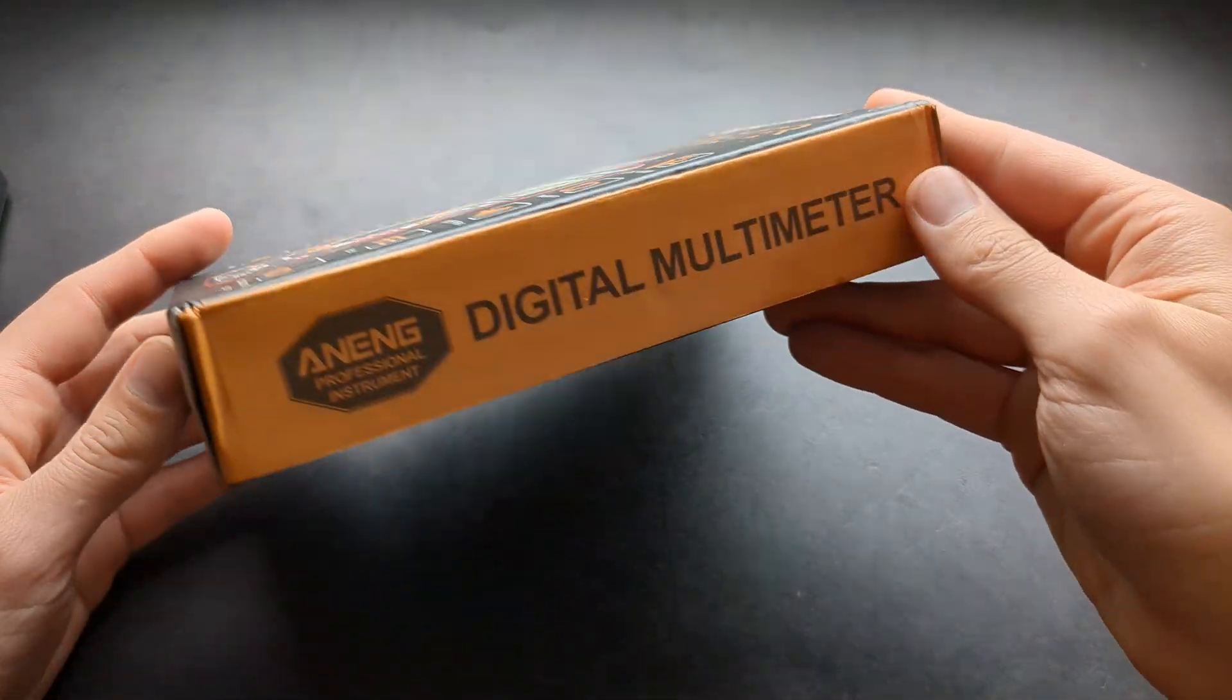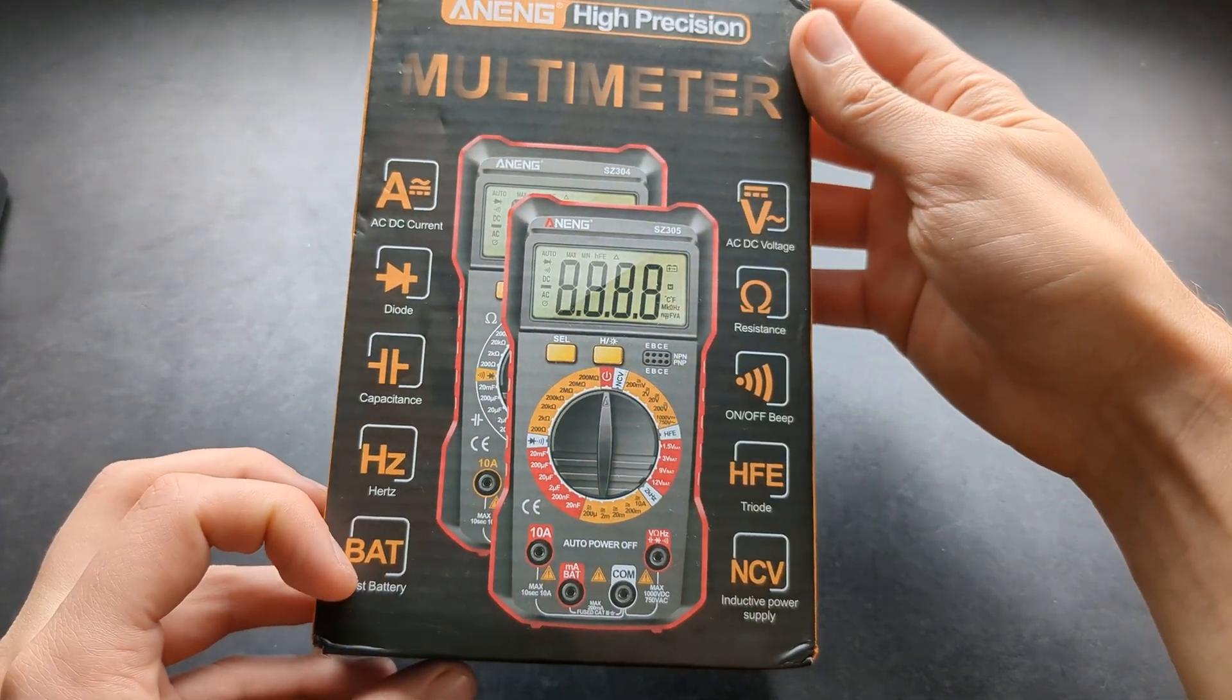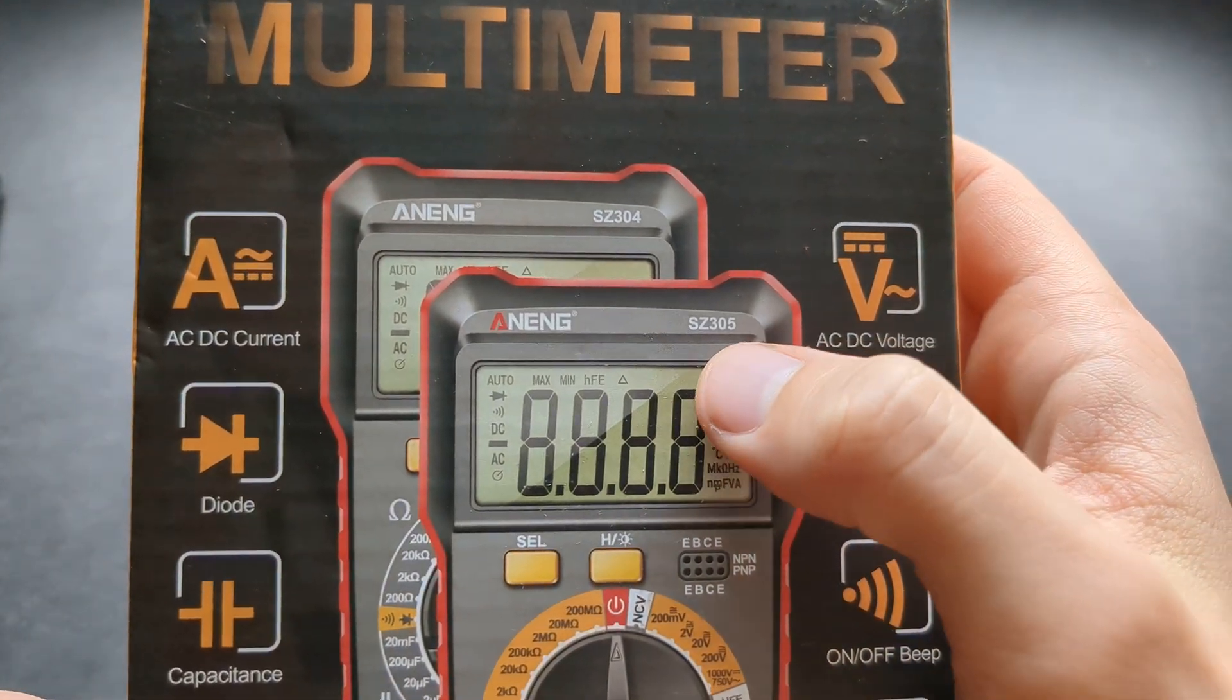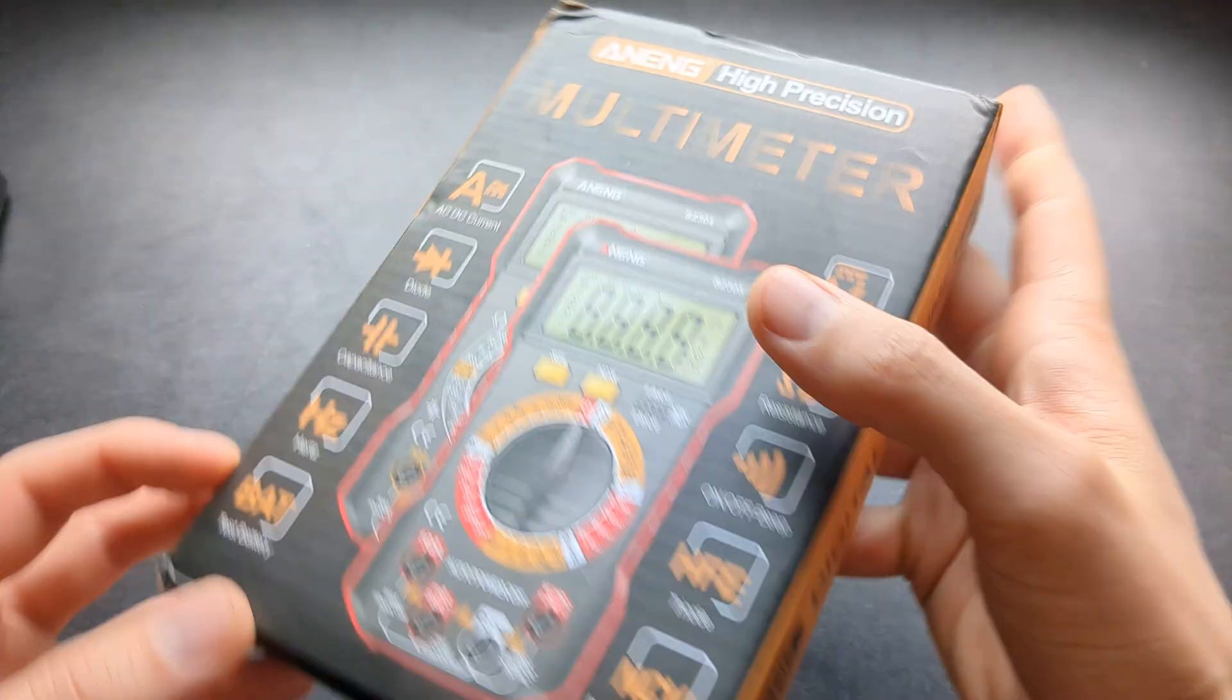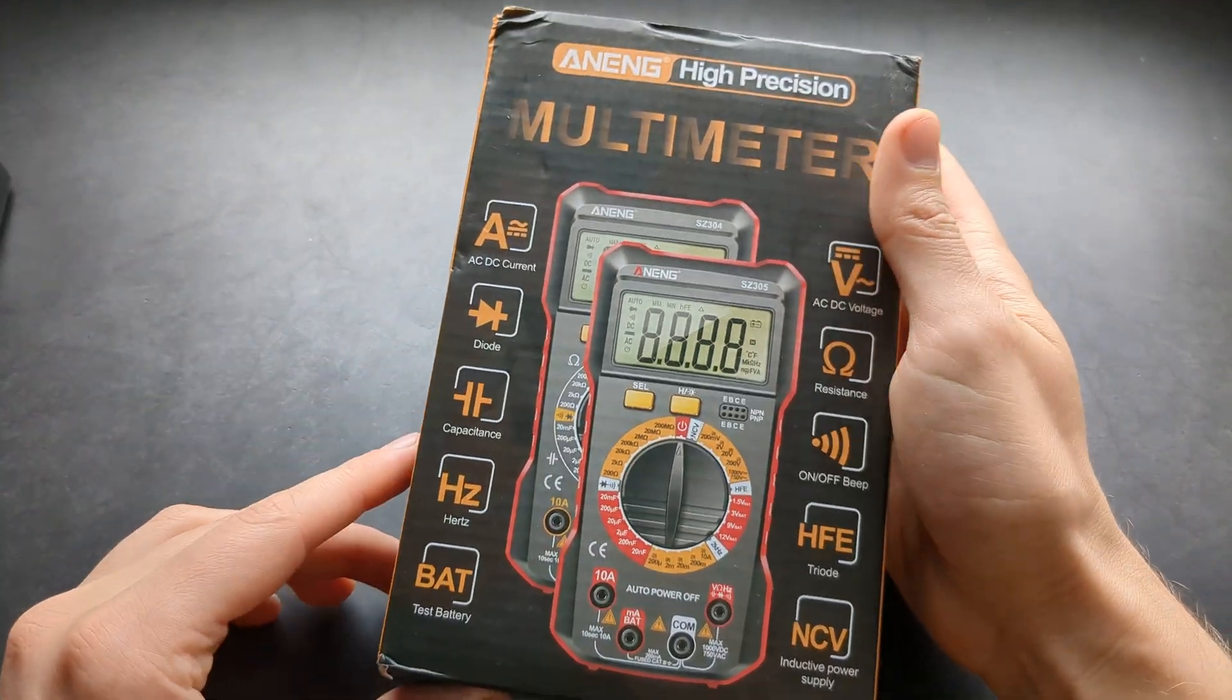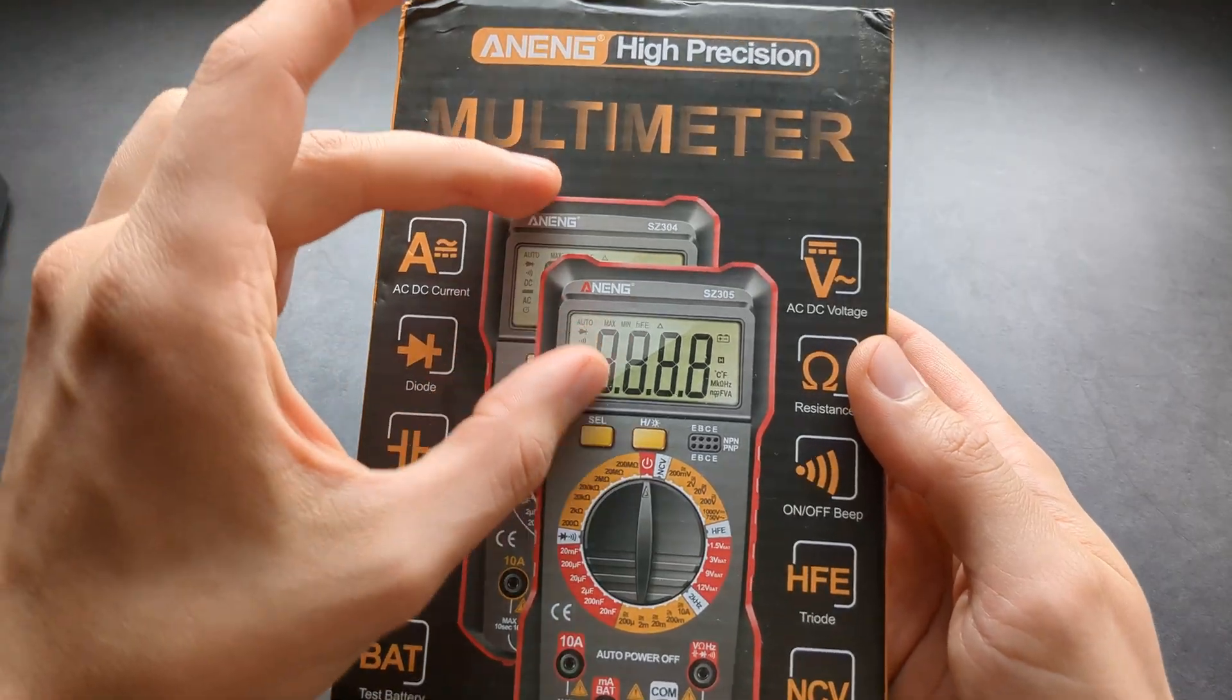This probably is the best value for money multimeter you can currently purchase. Model number SZ305 and SZ304, actually made by ANENG. They make quite a lot of different multimeters.